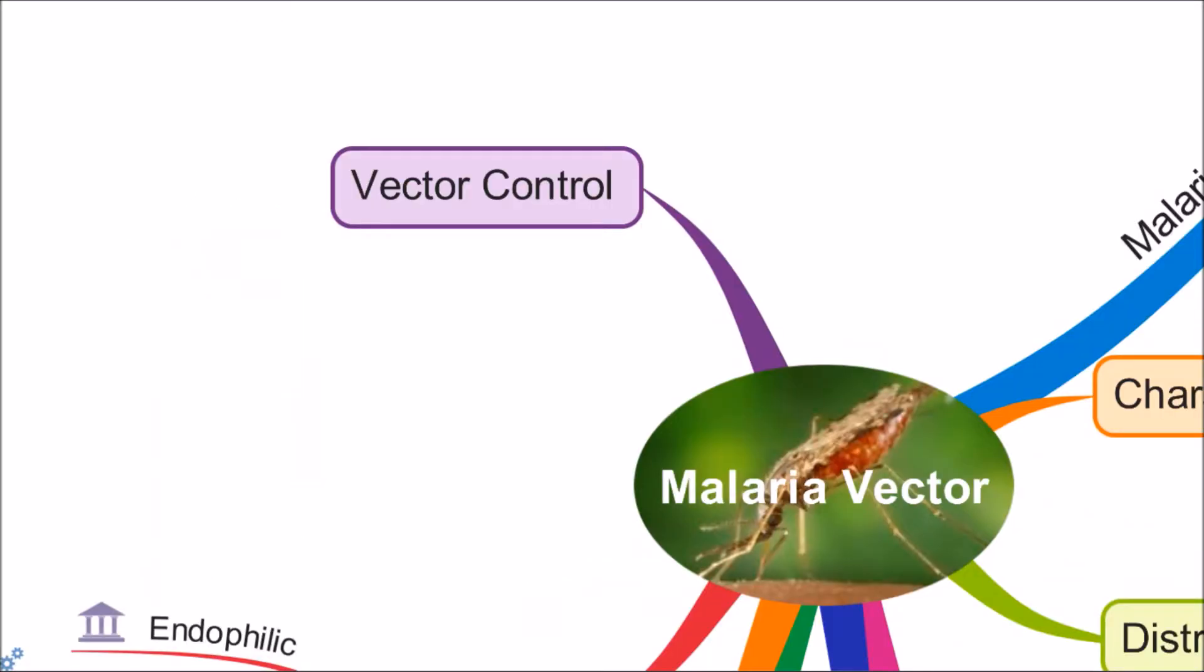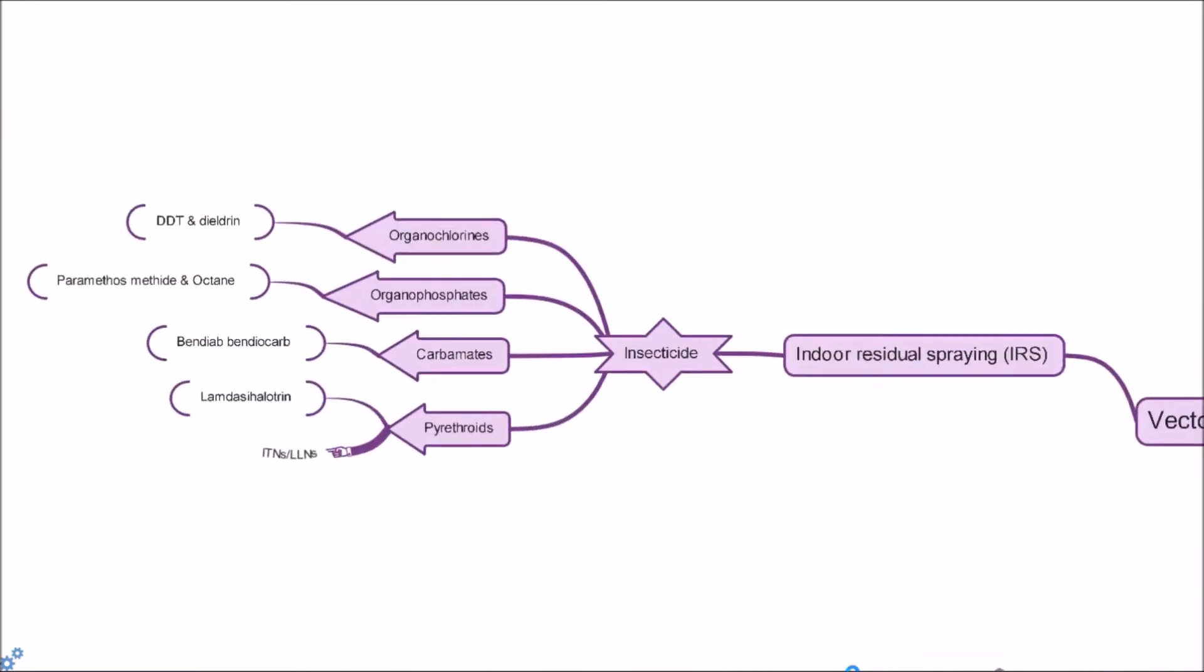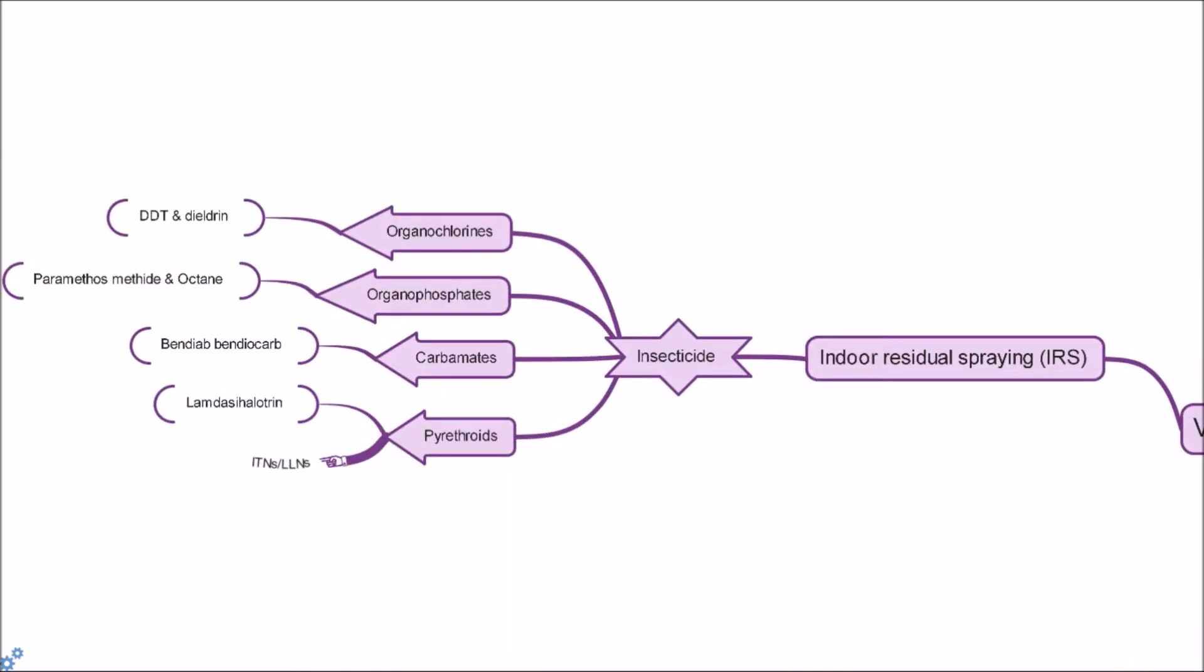One essential part of reducing malaria disease is by controlling malaria vector Anopheles mosquitoes. Vector control includes using different measures. First, indoor residual spraying (IRS).